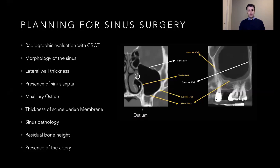When planning for a sinus floor augmentation, it's really important to have a CBCT scan evaluation beforehand because I can see the morphology of the sinus. I can see the lateral wall thickness, the presence of sinus septa, the maxillary ostium that we don't want to obliterate with our graft, the thickness of the Schneiderian membrane, any sinus pathology, the amount of alveolar bone left, and the presence of the artery within the lateral wall.